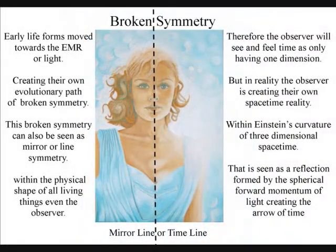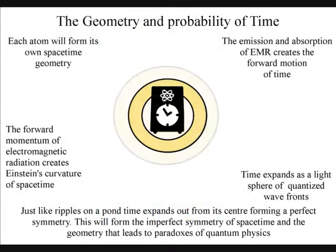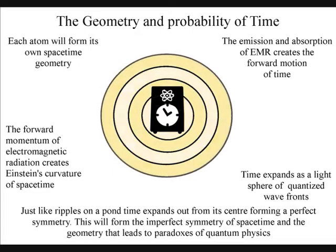This can be seen as line symmetry in the physical shape of the observer. They will see and feel this line symmetry as the arrow of time, or as the timeline pointing from the past into the future.